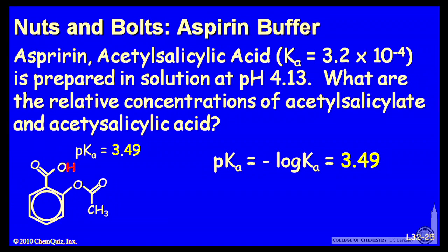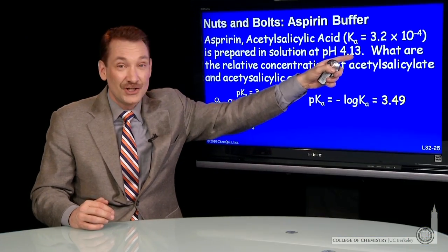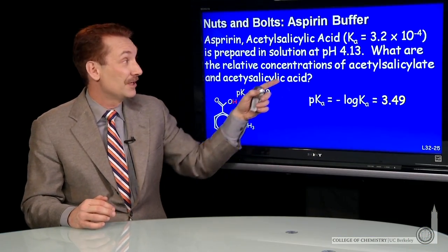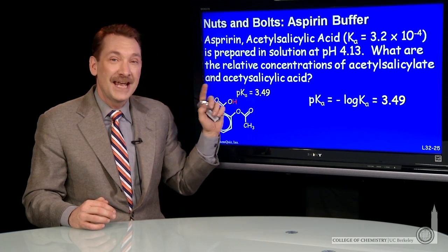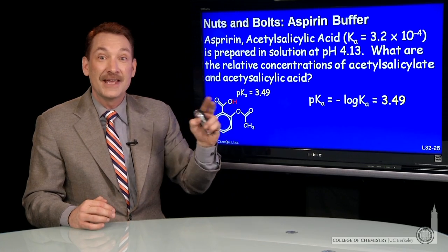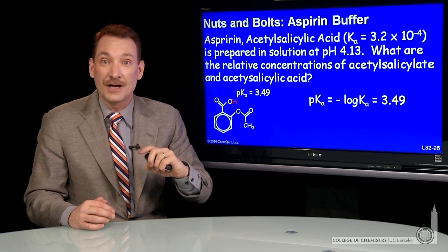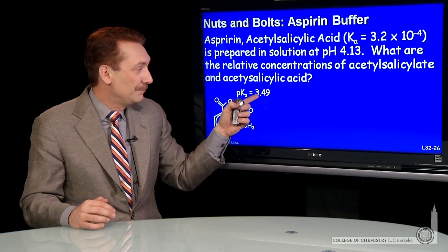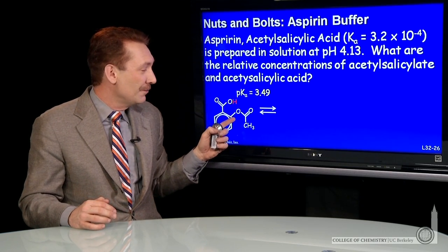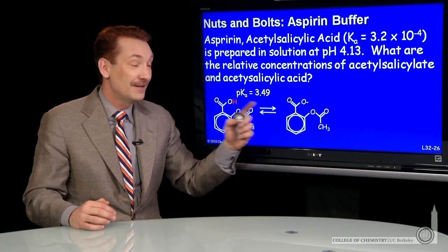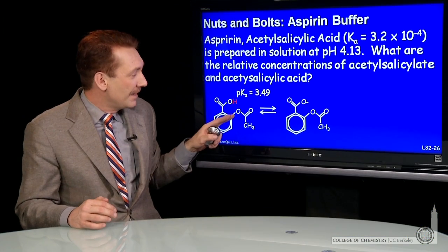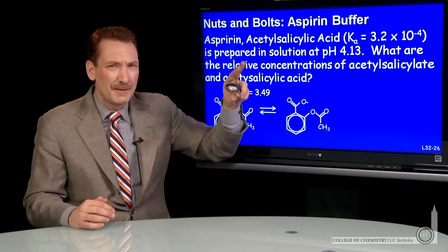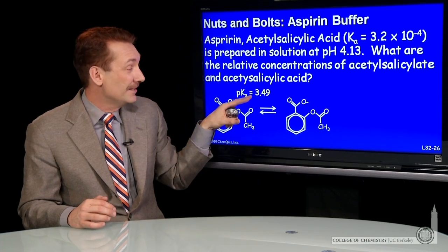So the pKa is 3.49, and I'm at a pH very close to that — really within half a unit. I know that when the pH equals the pKa, the acid and base forms are at equal concentration. So at pH 3.49, I'd expect equal concentrations of the acid form and the base form — the proton removed, with a minus oxygen remaining.